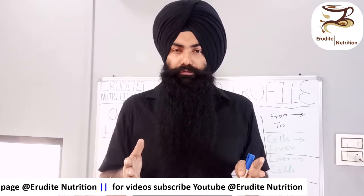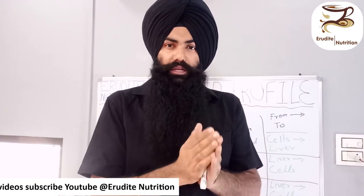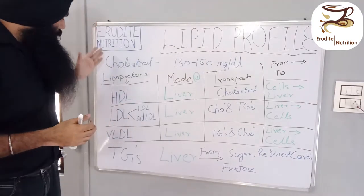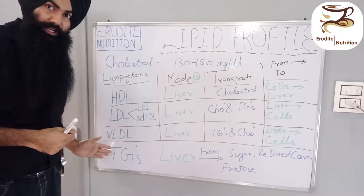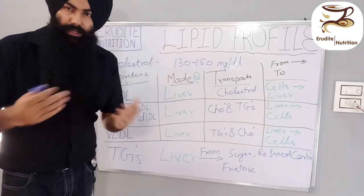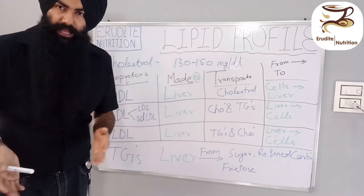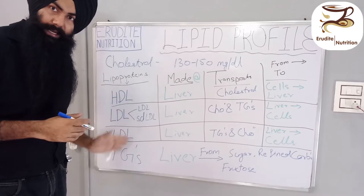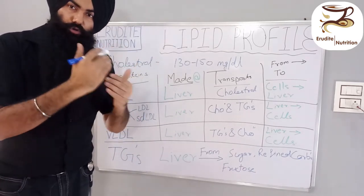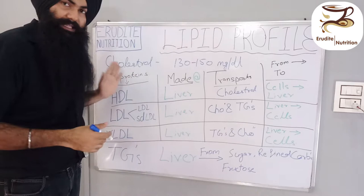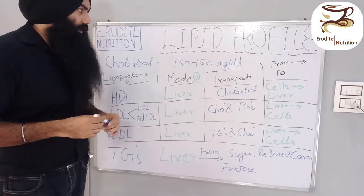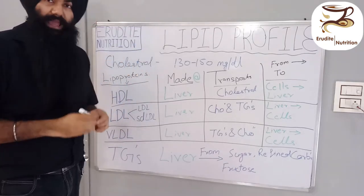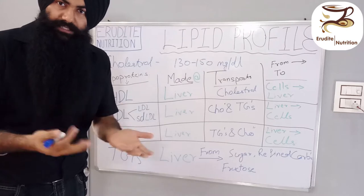Let's focus on what is in our lipid profile panel and what the different components mean. As you have seen, there are several different components in a lipid profile panel. Things like total cholesterol and the HDL to LDL ratio are not included here because if the main numbers are corrected, the ratios automatically balance up. So these are the main components we need to discuss.